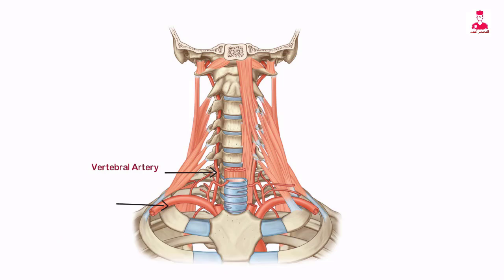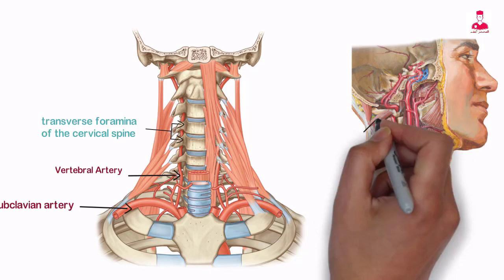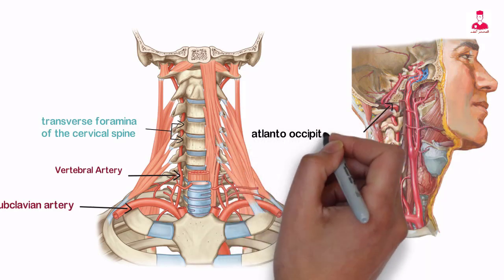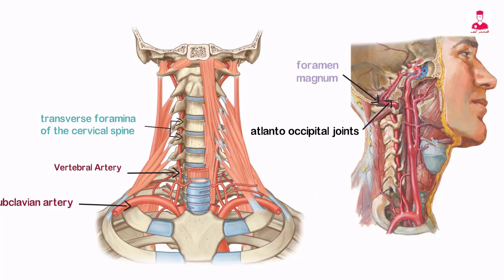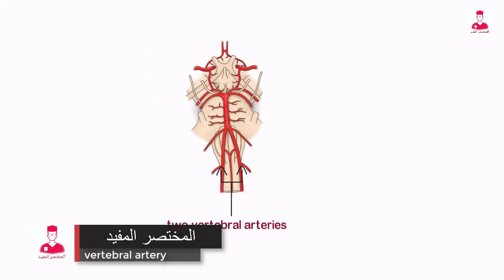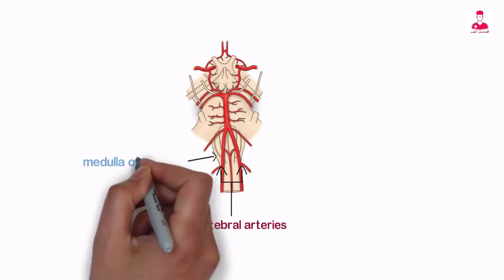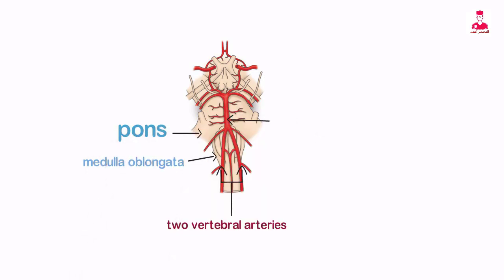The vertebral arteries begin in the neck at the subclavian artery and ascend vertically through the transverse foramina of the cervical spine. They can be divided into four segments. The vertebral arteries curve around the atlanto-occipital joints to enter the cranium through the foramen magnum. The two vertebral arteries course along the medulla oblongata and unite ventral to the pons, forming the basilar artery.